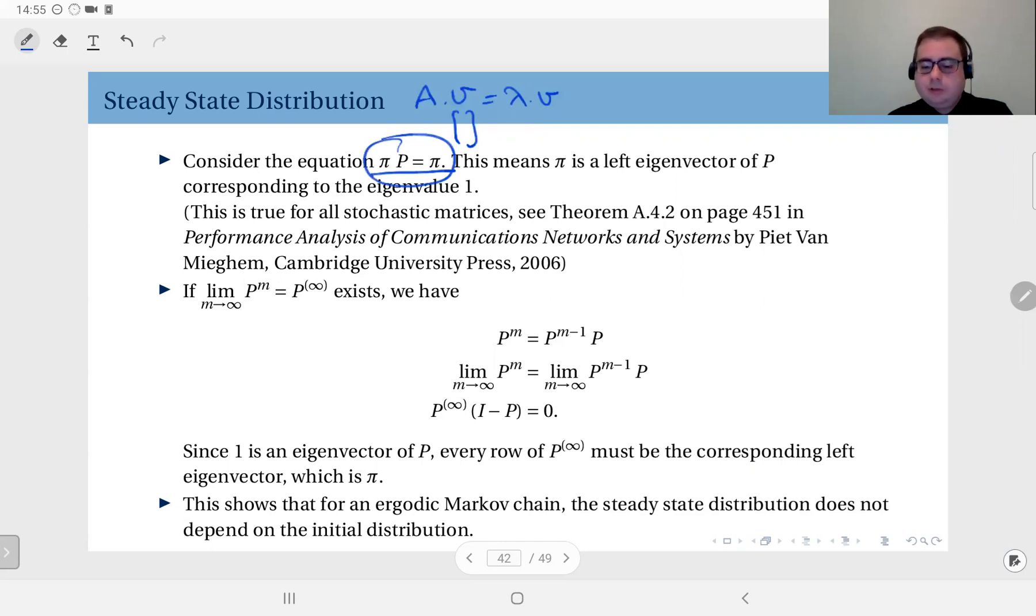So in general you can write this as u A = u λ. If you have such an equality where u is a row vector, then u is called a left eigenvector of matrix A corresponding to the eigenvalue λ.